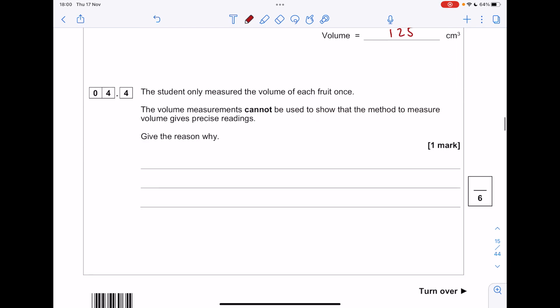The student only measured the volume of each fruit once. The volume measurements cannot be used to show that the method gives precise readings. Give the reason why. We can't say that we have precise readings because we haven't made repeat readings for each volume. We need to prove that these readings would be close together.